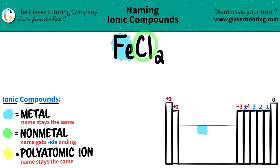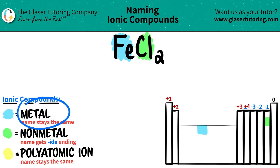Chlorine, on the other hand, is in the halogen group. It's in group 7A or 17, which is right over here. And these are your non-metals. So we have chlorine as the non-metal. So we have a metal and a non-metal — that's an ionic compound.